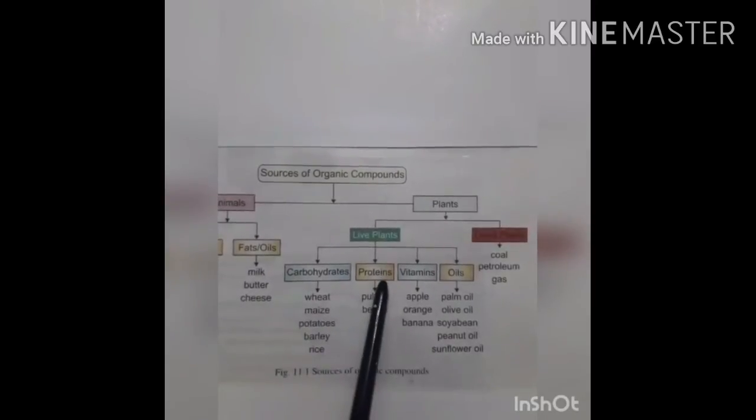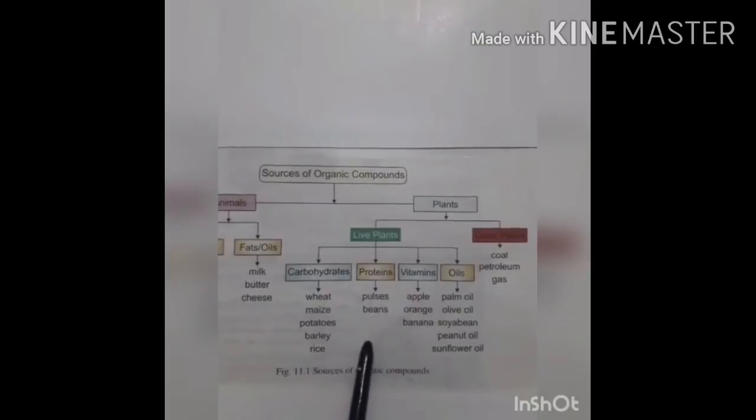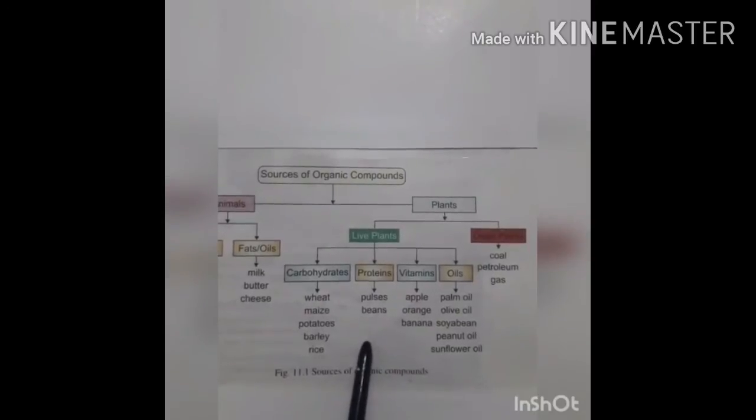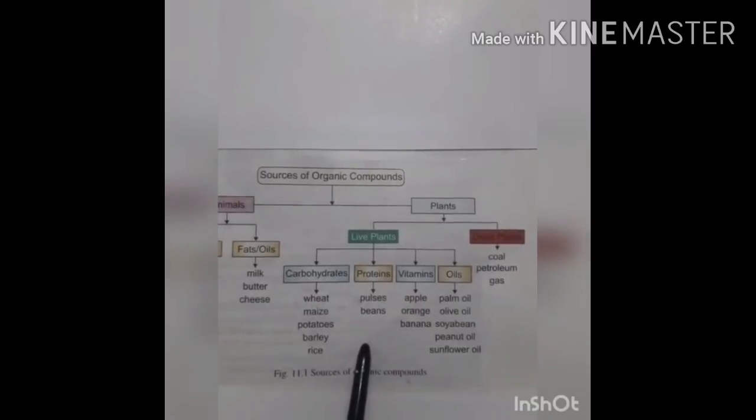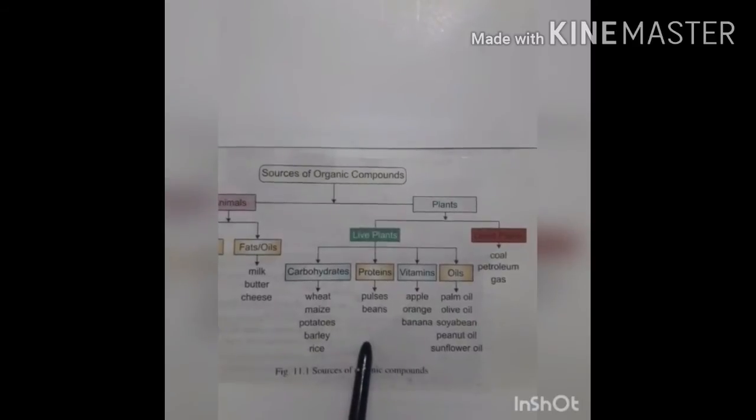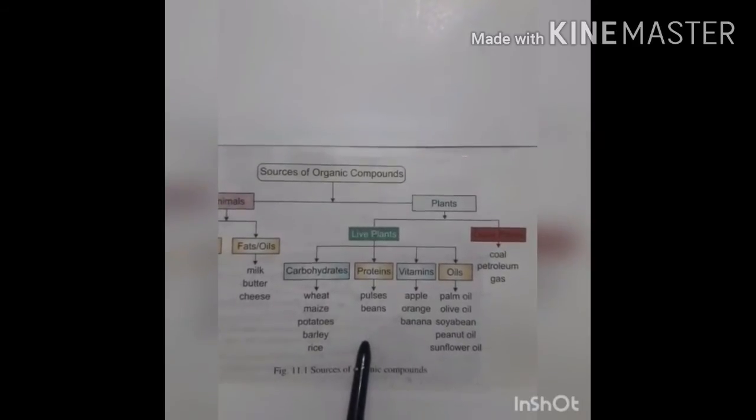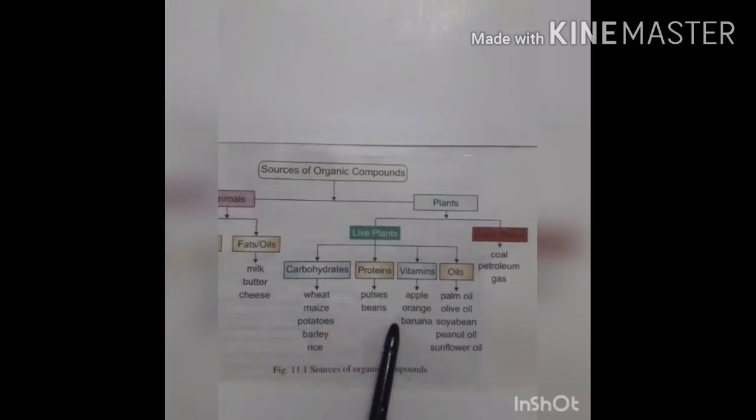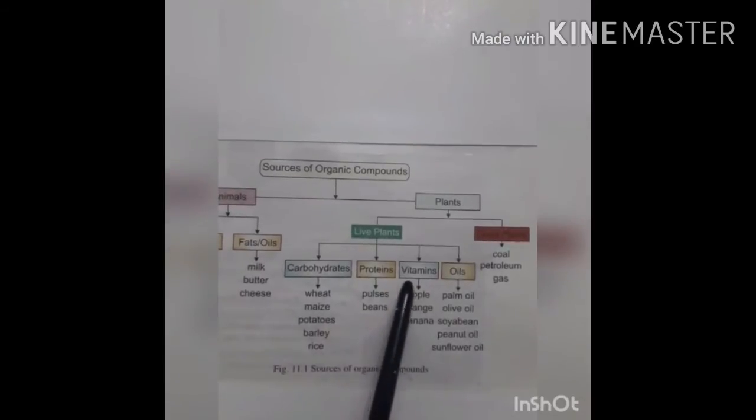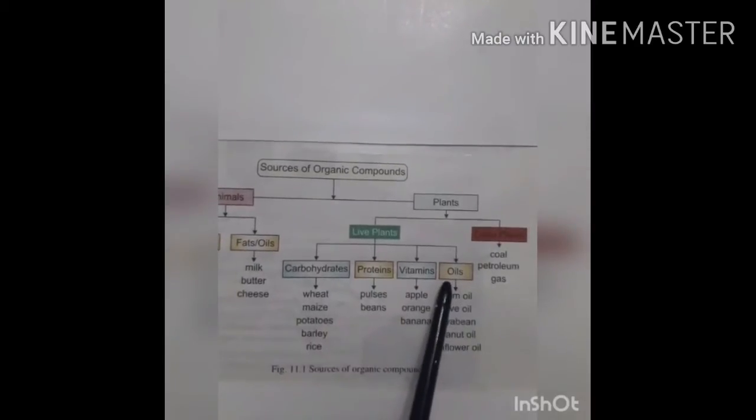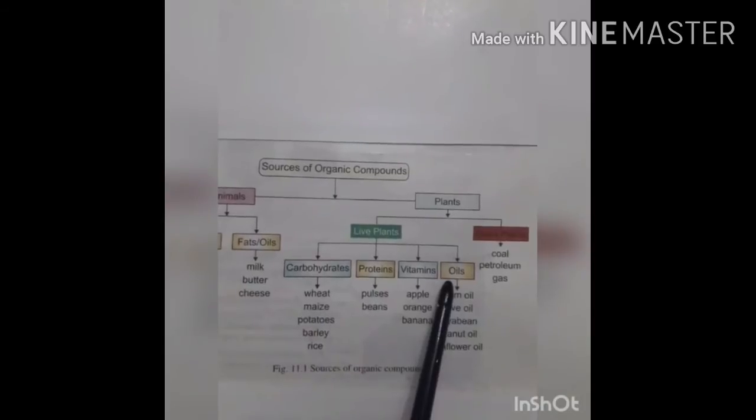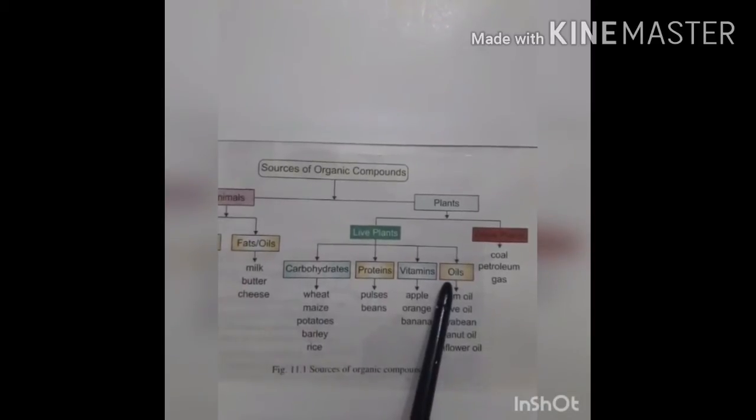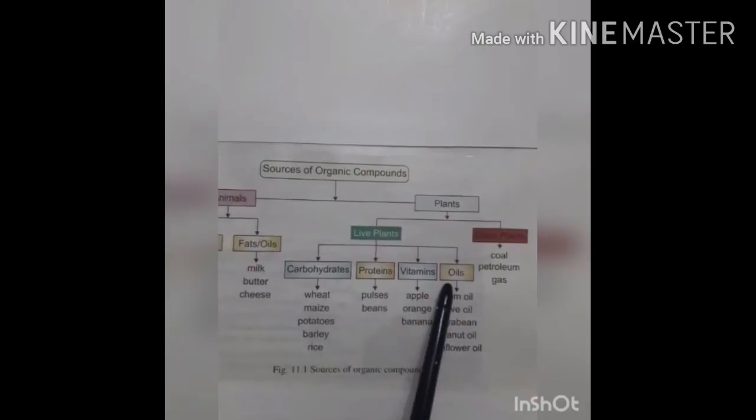Proteins are found in pulses and beans. They are prepared by nitrogen fixation by bacteria which are found on the roots of the plants. Apples, bananas, and some other citrus fruits are a rich source of vitamins. Plant oils are found in the seeds of some plants such as sunflower, palm, coconut, and grape seed.